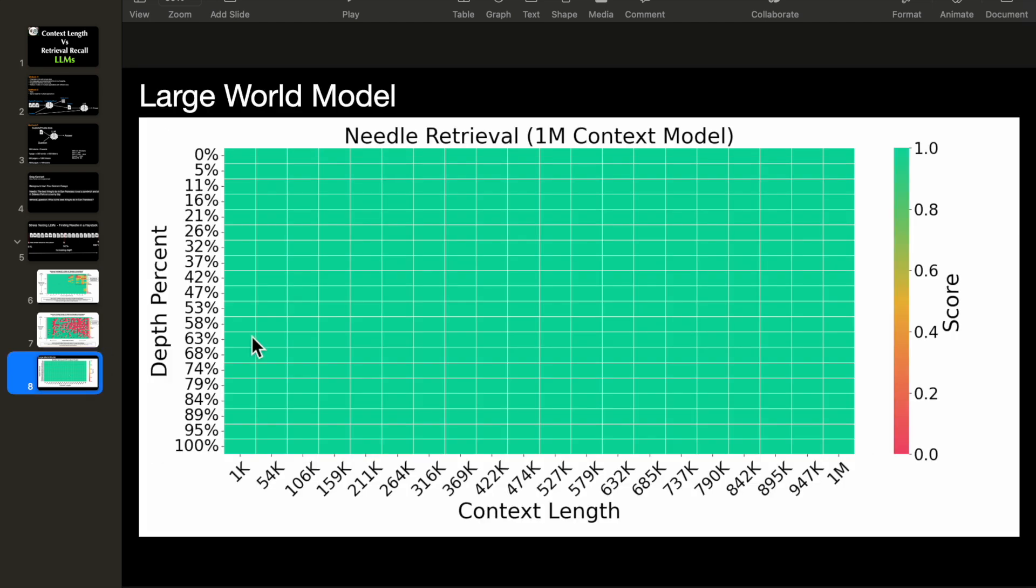Now, recently, there is another open source model. The authors call it a large language model. And they say it can take the context length of 1,000,000 tokens and these results are too perfect. So no matter what the context length is, no matter where in the text the needle is, the retrieval recall is perfect.